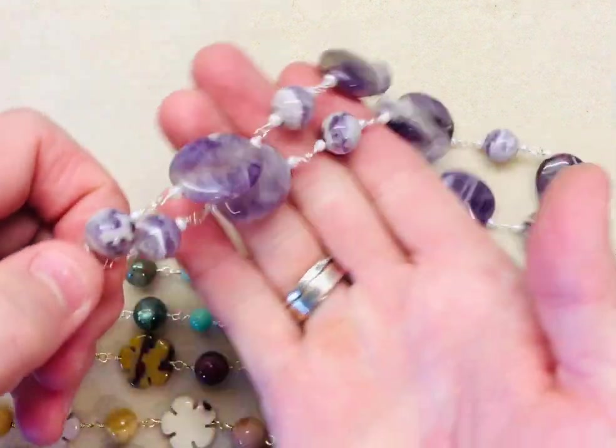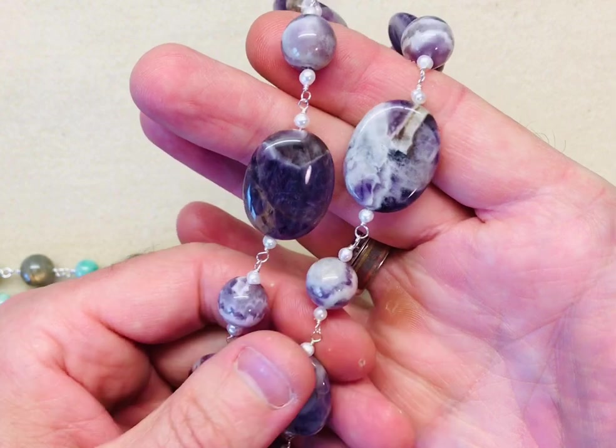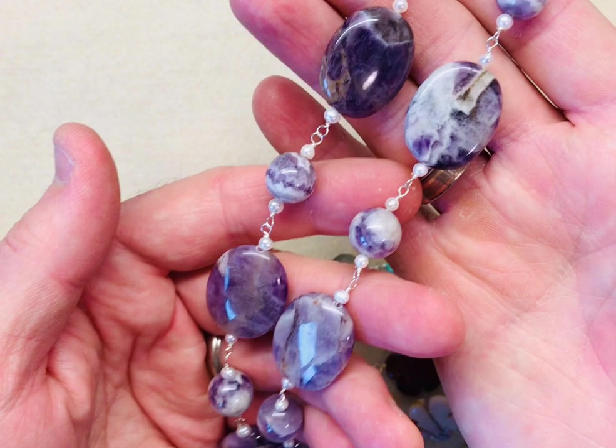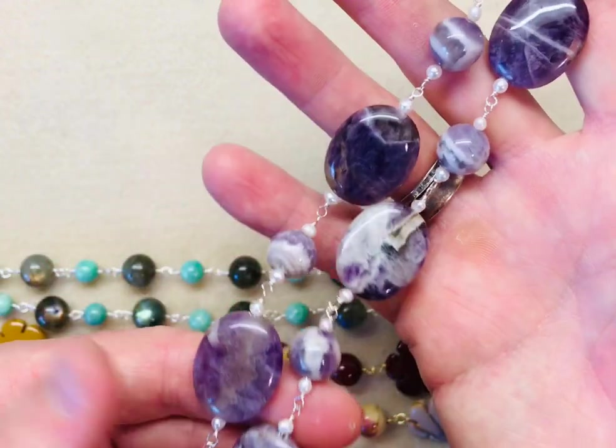Then mixing it up a little bit I've gone for my birthstone. This is amethyst, dog-tooth amethyst, in large round ovals, rounds and these tiny delicate little seed pearls just add a bit of difference. So you can see same technique but a completely different look.